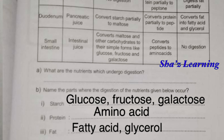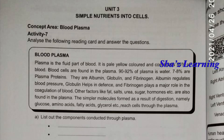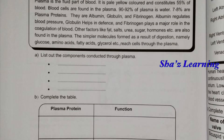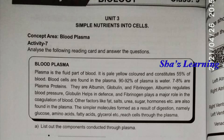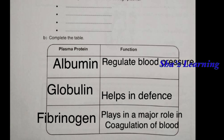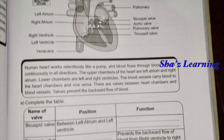They will take the lower part of the nutrients. Now we have some blood plasma. We have a short note. Plasma protein functions — which are they? Plasma proteins are Albumin, Globulin, and Fibrinogen. Albumin regulates blood pressure. Globulin helps in defense. Fibrinogen plays a major role in coagulation of blood.